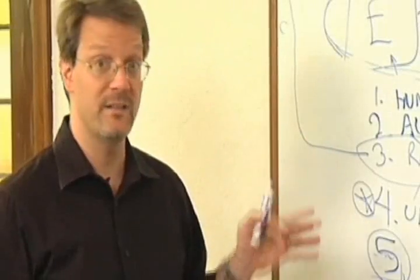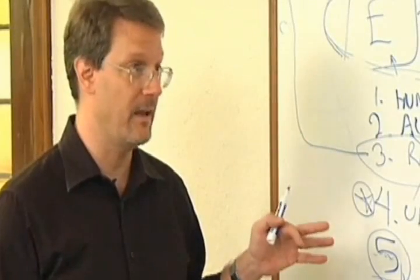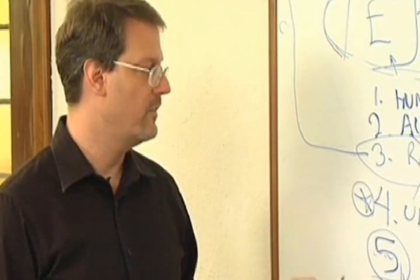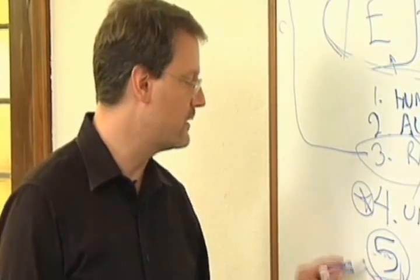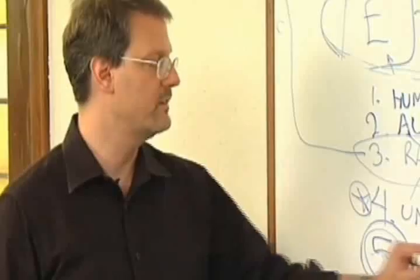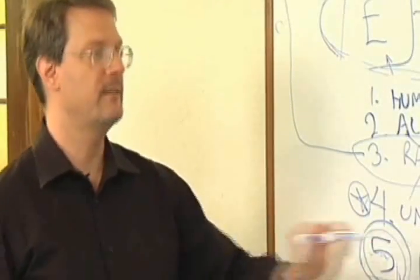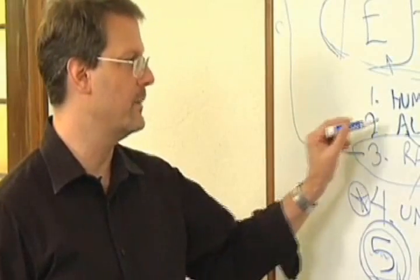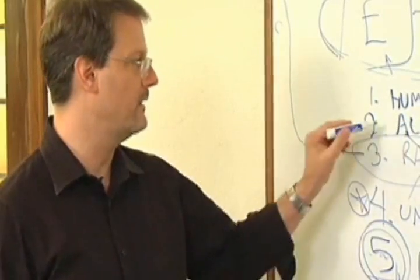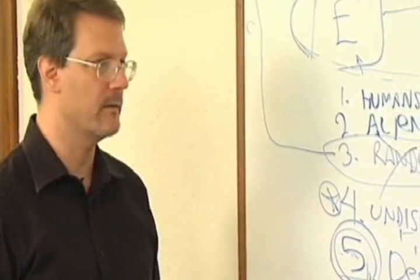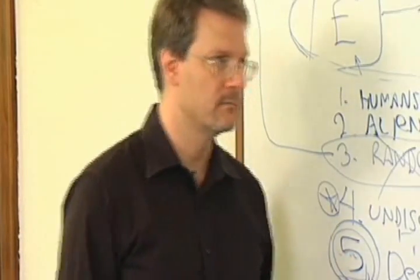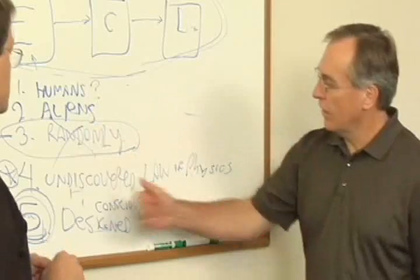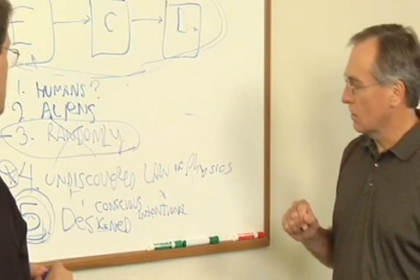So if we look at DNA and we see how incredibly sophisticated it is, which later in the session we'll talk about that, the only reasonable conclusion is it was designed by an intelligent being. And this is a different argument than the alien argument because we have to have a being that's not created. So in the scientific community, you've got five alternatives here.